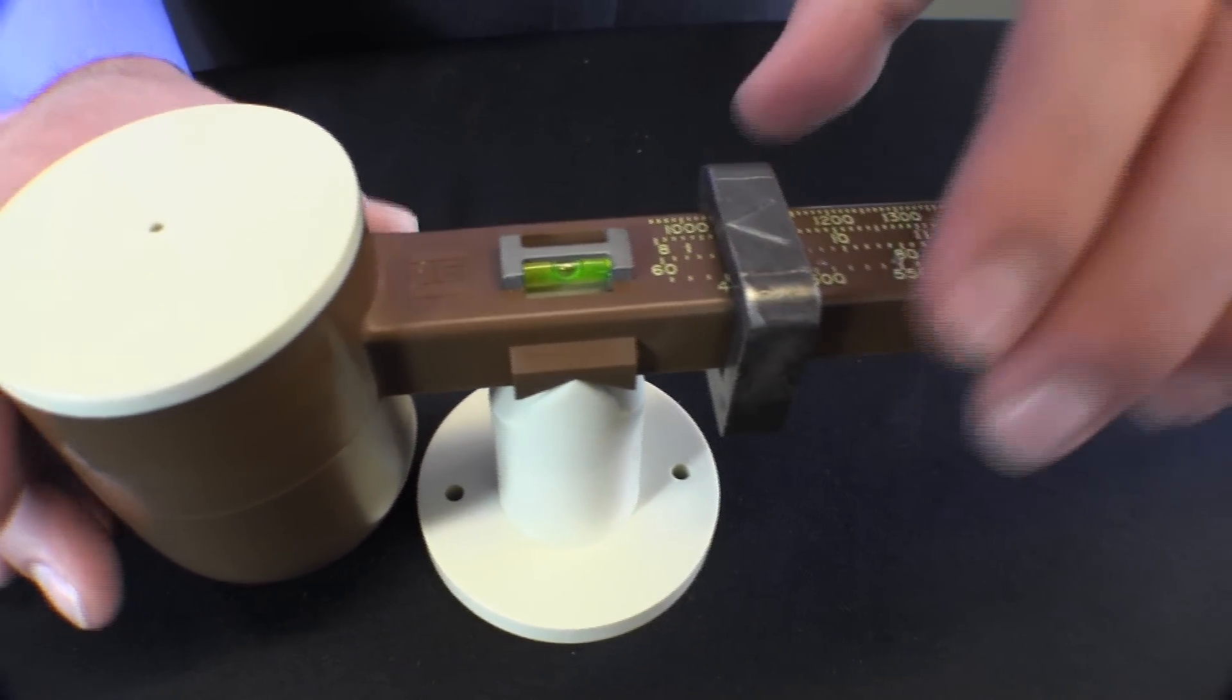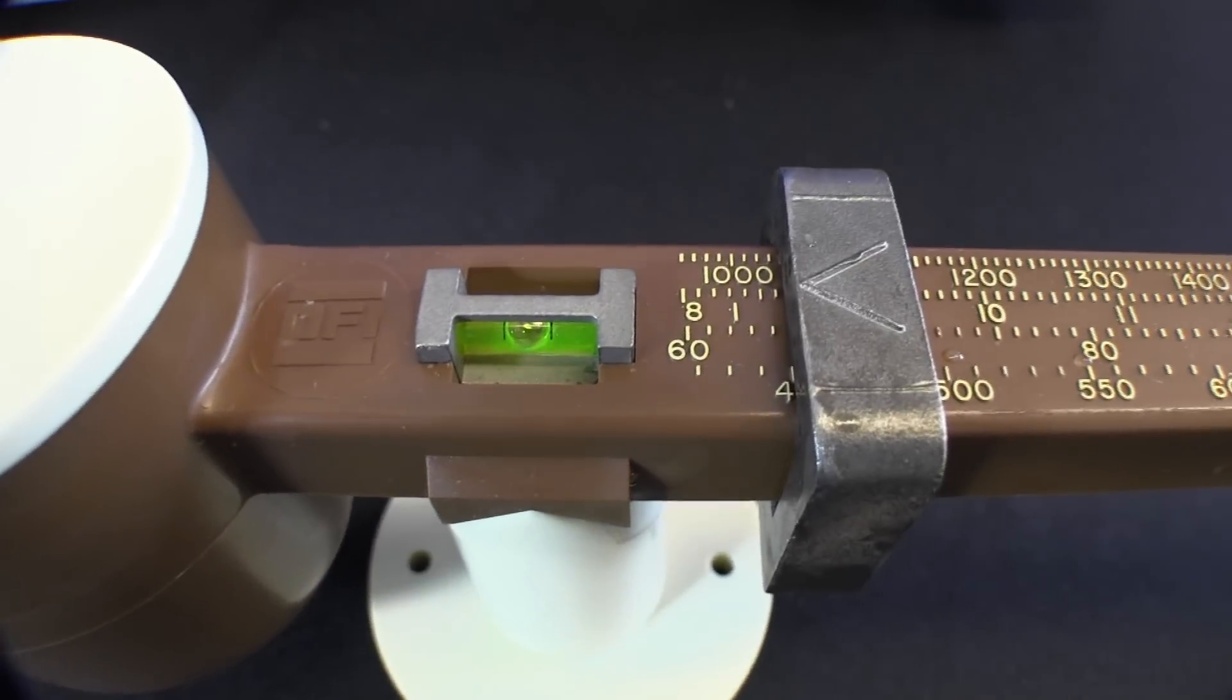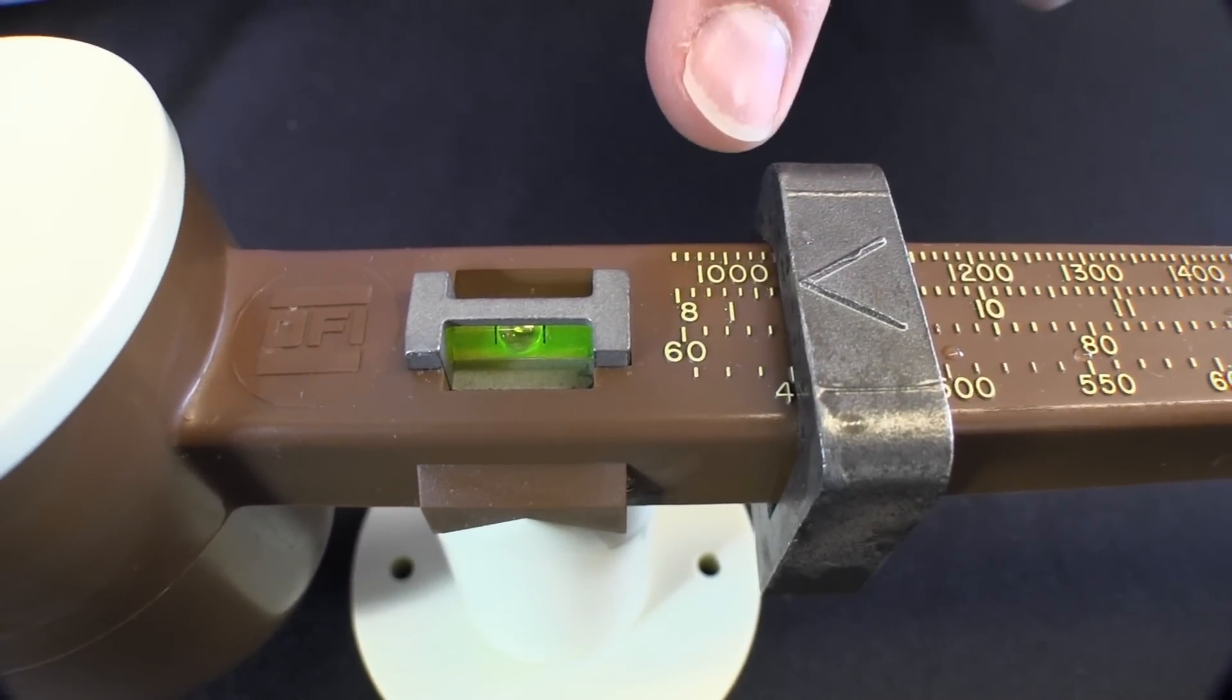When the bubble is between the two lines you'll know that the mud balance is level. Then you can take your reading from the left hand side of the counterweight.